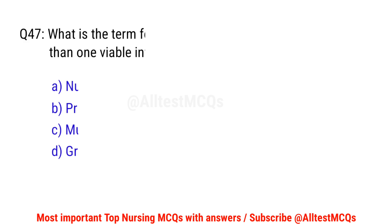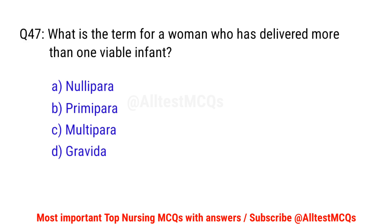Question number 47. What is the term for a woman who has delivered more than one viable infant? The right option is C: Multipara.